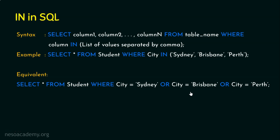The problem with OR is that if we have a list with 50 values, it becomes very long — city = 'Sydney' OR city = 'Brisbane' OR city = 'Perth' OR so on. That's why IN is handy when we have a list with multiple values.